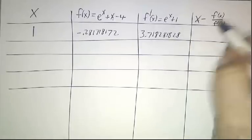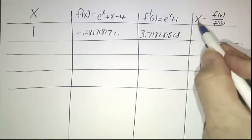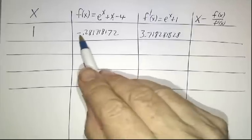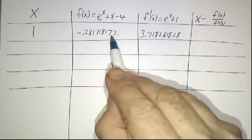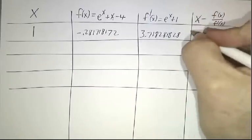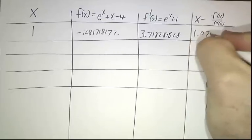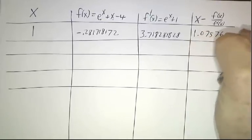And then we just pull out our calculator and say 1 minus negative 0.271818172 divided by this number, and we wind up getting 1.0757656.